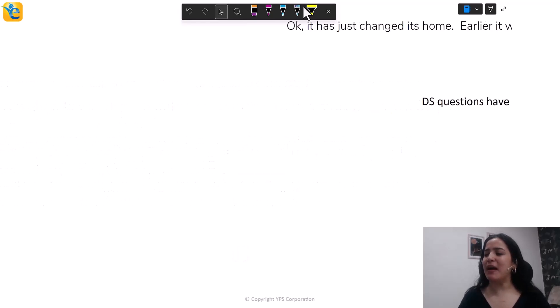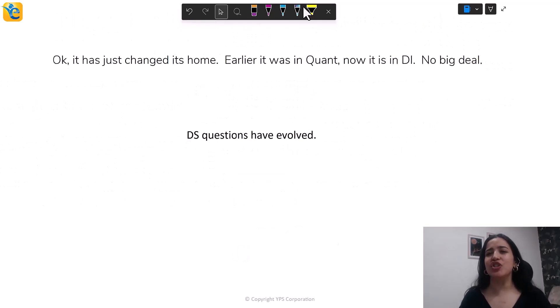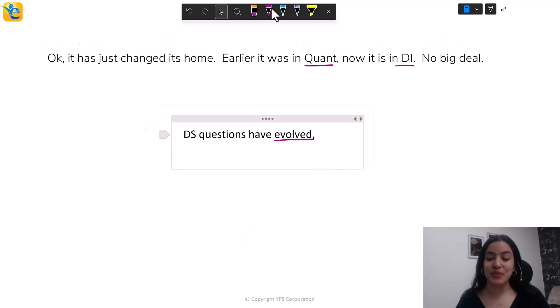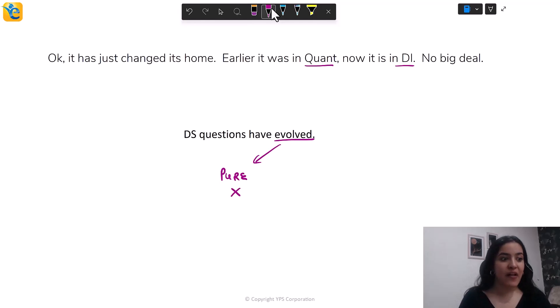Done? Now I'll give you my take on each of these. The first piece is just about GMAT, the data sufficiency questions, just changing its home in the GMAT exam. So while earlier it was a part of Quant, now it is in DI, so no big deal. If this is what you feel, then that's not true at all. It's not just that they have changed the section in which they were placed, they have actually evolved.